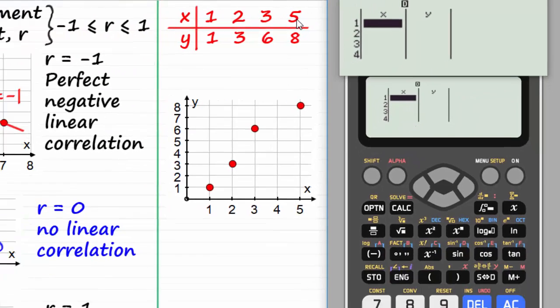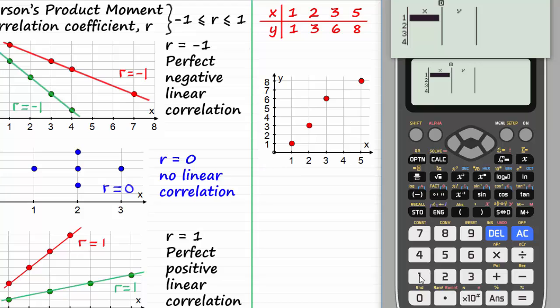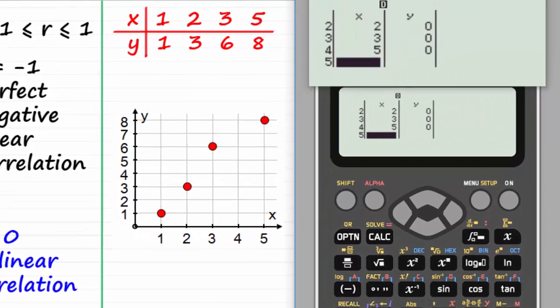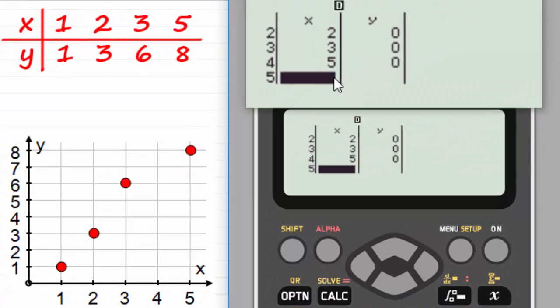We'll start with the x's and we'll enter these values that we see here: 1, 2, 3 and 5. We do that by just entering the 1, press equals and you'll see it's entered into the x column. We do the same now for 2 equals, then 3 equals and then 5 equals. That's our observations for x entered.